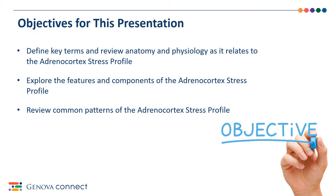Here are your objectives outlining what you can expect to learn. First, we must define key terms and review anatomy and physiology, so when we discuss the components of the profile, you will have understanding of where and how we make cortisol, which is our fight-flight hormone, and what it impacts in your body. We will also explore the features and components of the adrenal cortex stress profile. Lastly, we will review common patterns, but as it relates to your specific findings and treatment, please speak with your primary care physician and do not attempt to self-treat.